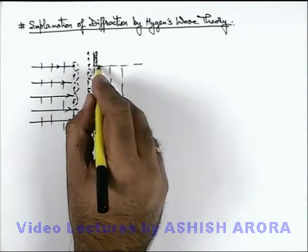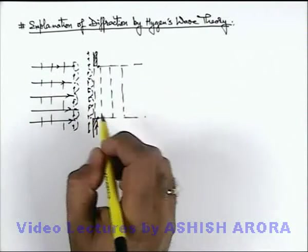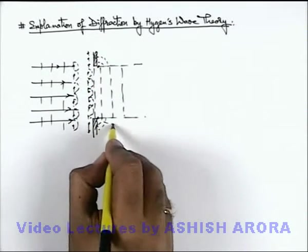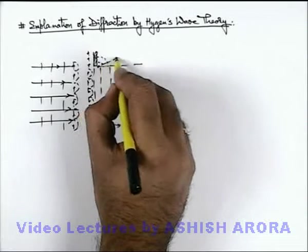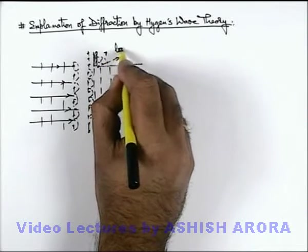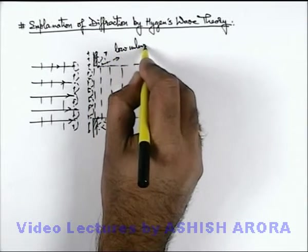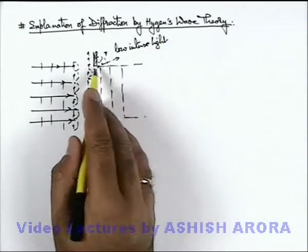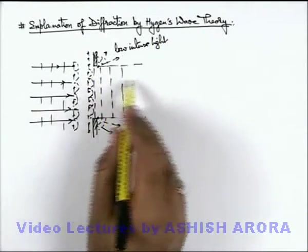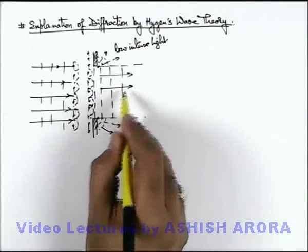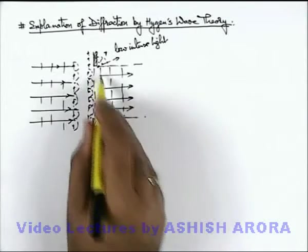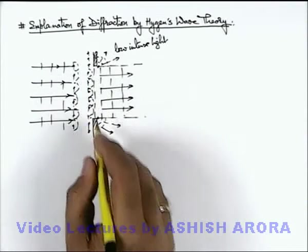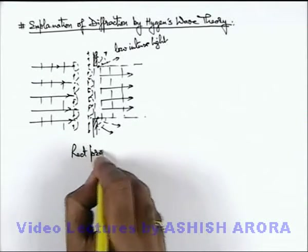All those secondary wavelets which are at the edges of the wave front produce some light in the surrounding region, but the intensity of this light will be very low — this is very low intense light — because it is due to only 1 or 2 wavelets. In between, the intensity of light is quite high because there are almost infinite number of wavelets within this region. So this is what we consider as rectilinear propagation of light.